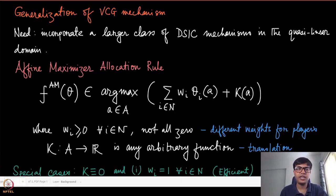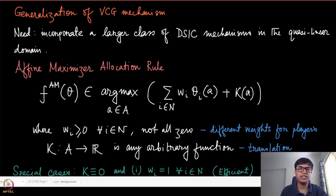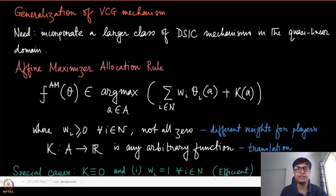Now that we know the VCG mechanism in quite some detail along with its advantages and disadvantages, this is the right time to look at a generalized version of the VCG mechanism. The VCG mechanism essentially picks the efficient allocation, which is the allocation that maximizes the sum of the values of all the agents. One way of generalizing this VCG allocation is to incorporate some weights and a function which translates the allocations.